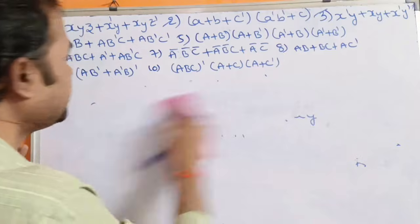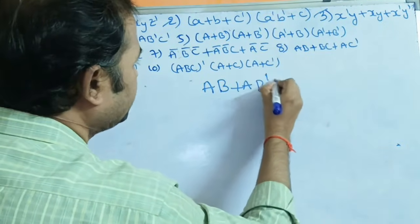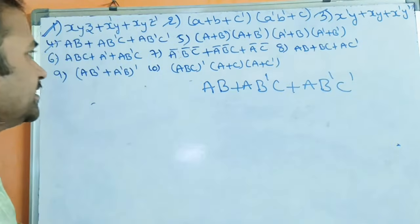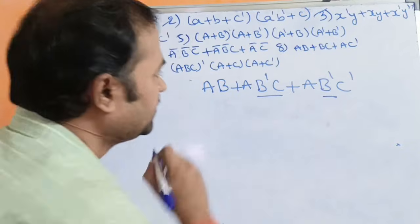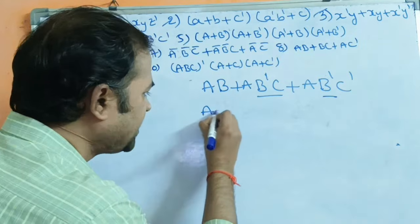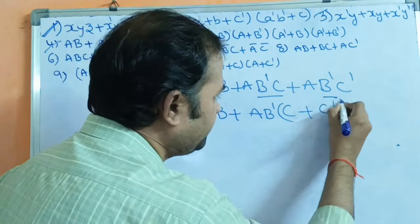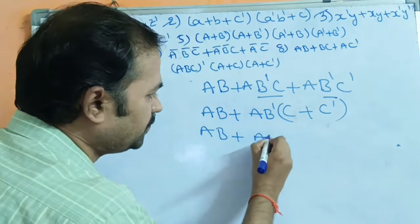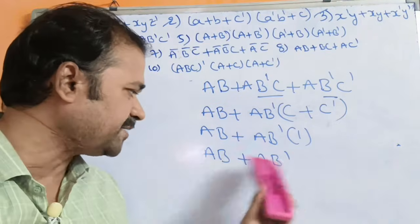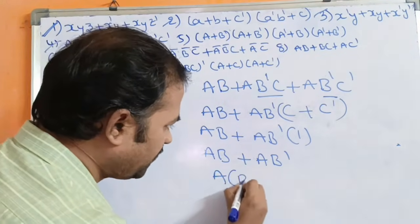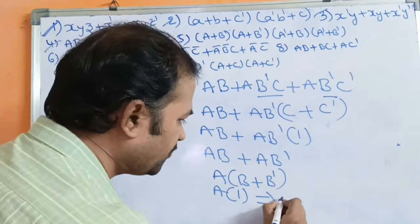Now let us solve the fourth example: ab + ab'c + ab'c'. Observing the second and third terms, ab' is common. Remaining variables are c and c', so ab'(c + c') = ab'·1 = ab'. Now observing ab + ab': a is common, giving a(b + b') = a·1 = a.